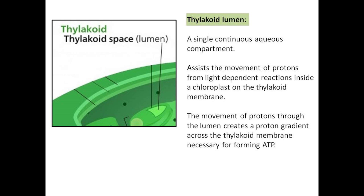The thylakoid lumen is a single, continuous, aqueous compartment. It assists the movement of protons from light-dependent reactions inside a chloroplast on the thylakoid membrane. The movement of protons through the lumen creates a proton gradient across the thylakoid membrane, necessary for forming ATP.